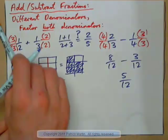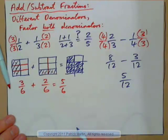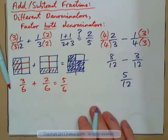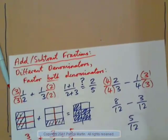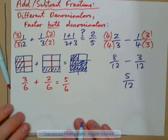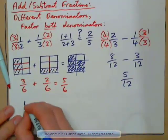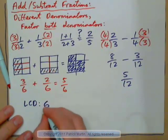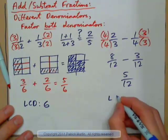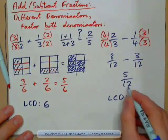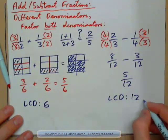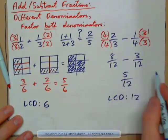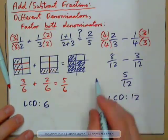The lowest common denominator for 1 half plus 1 third is 6. The lowest common denominator for 2 thirds minus 1 quarter is 12.